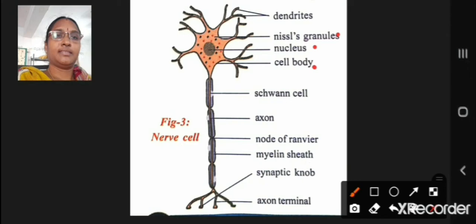The small projections are dendrites while a long one that extends to different parts of our body is called axon.